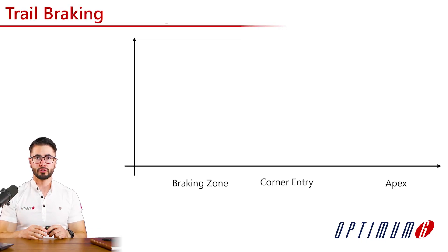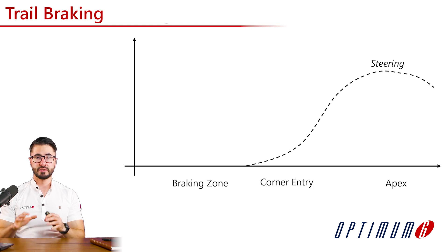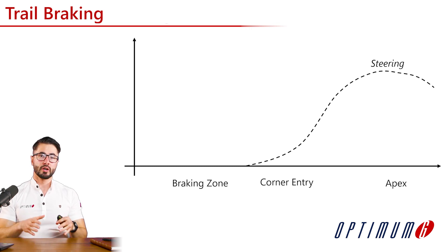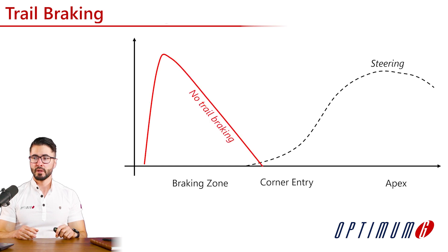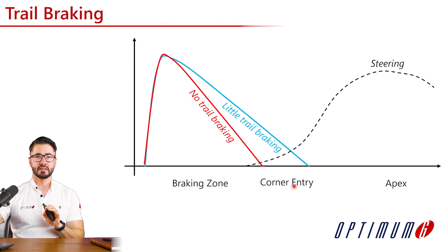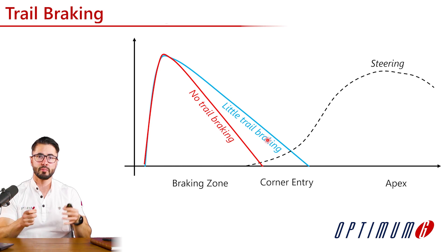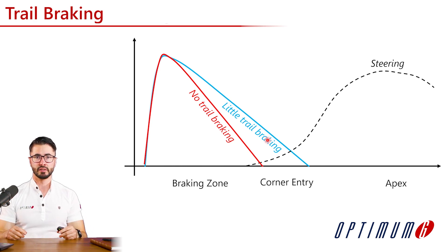Before anything else, a quick recap on what trail braking is. As we can see here, we have a steering profile and we are going to look at the brake trace where no trail braking is being performed. You can see that there is no overlap at corner entry between the brakes and the steering. In the second example, the driver is trail braking a little more, so you can start seeing a little more overlap between the brakes and the steering.